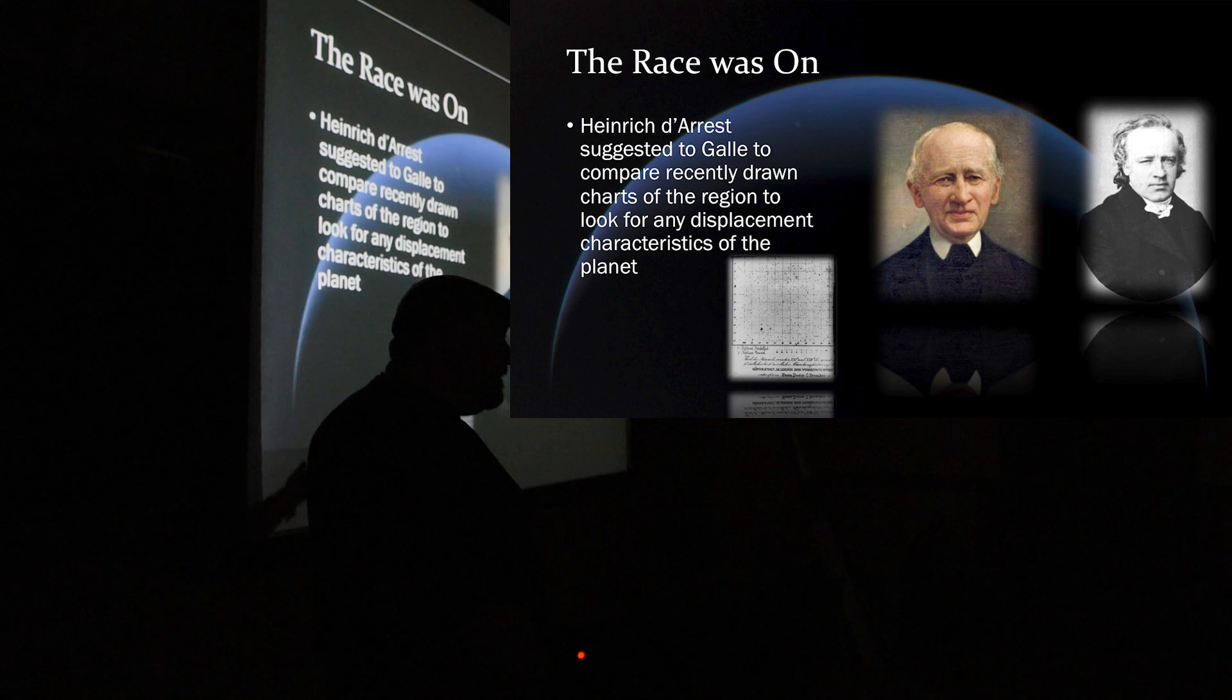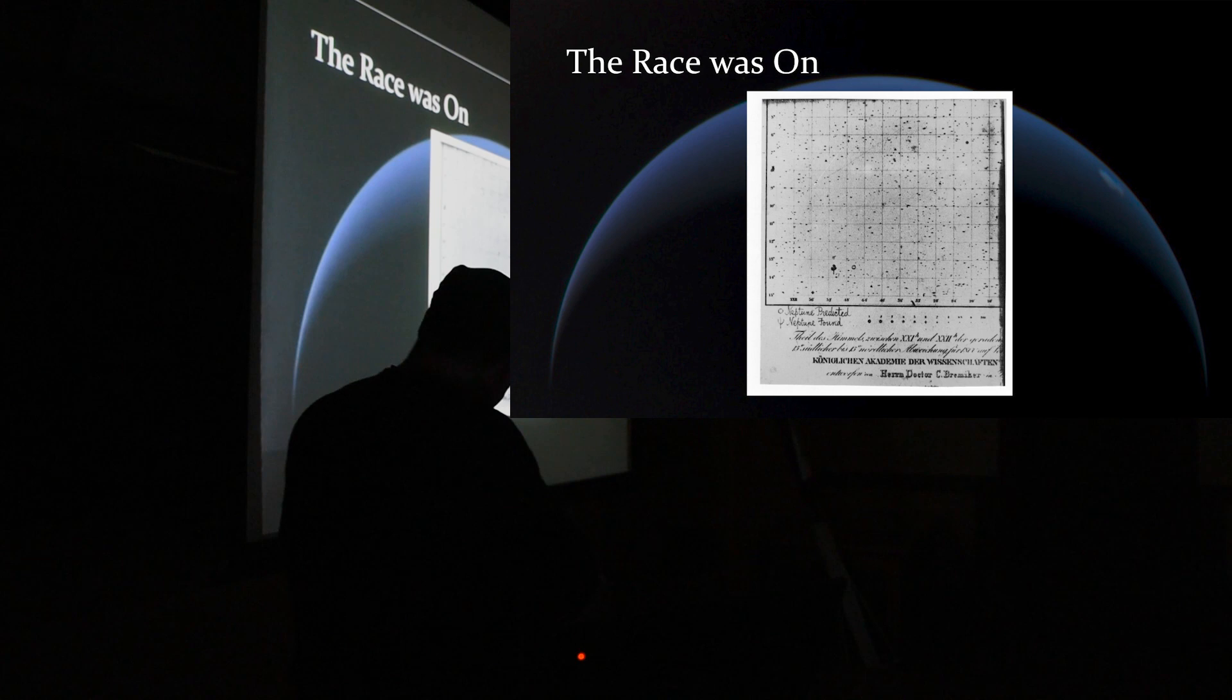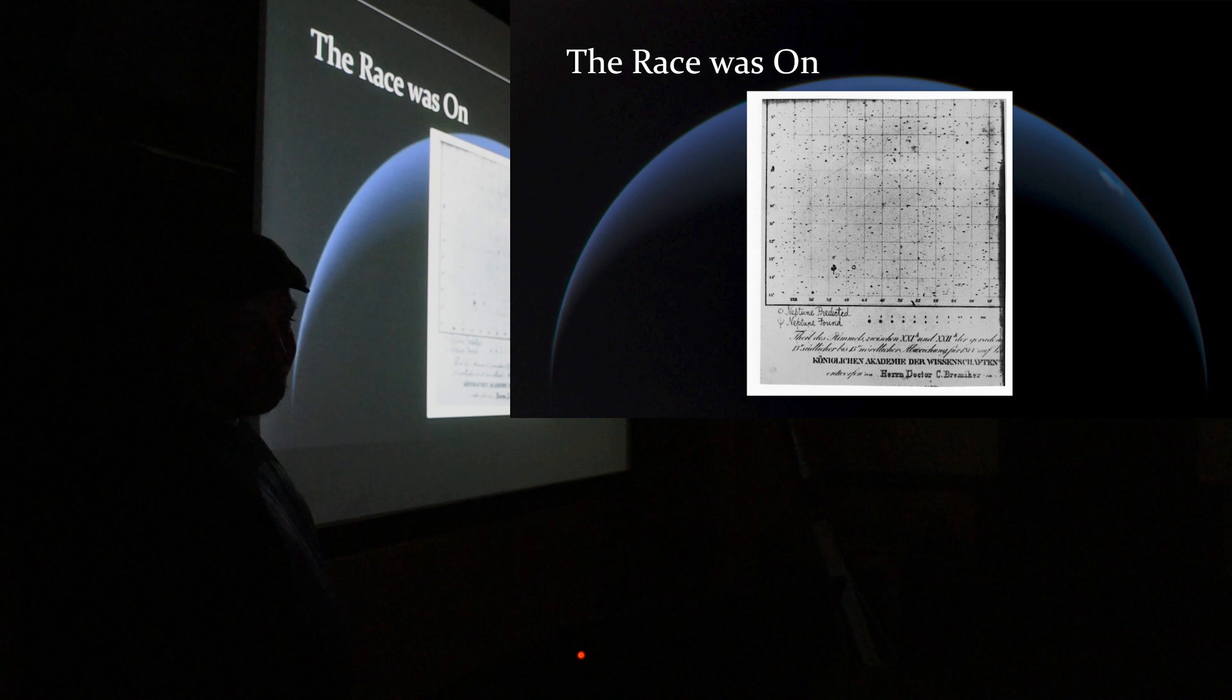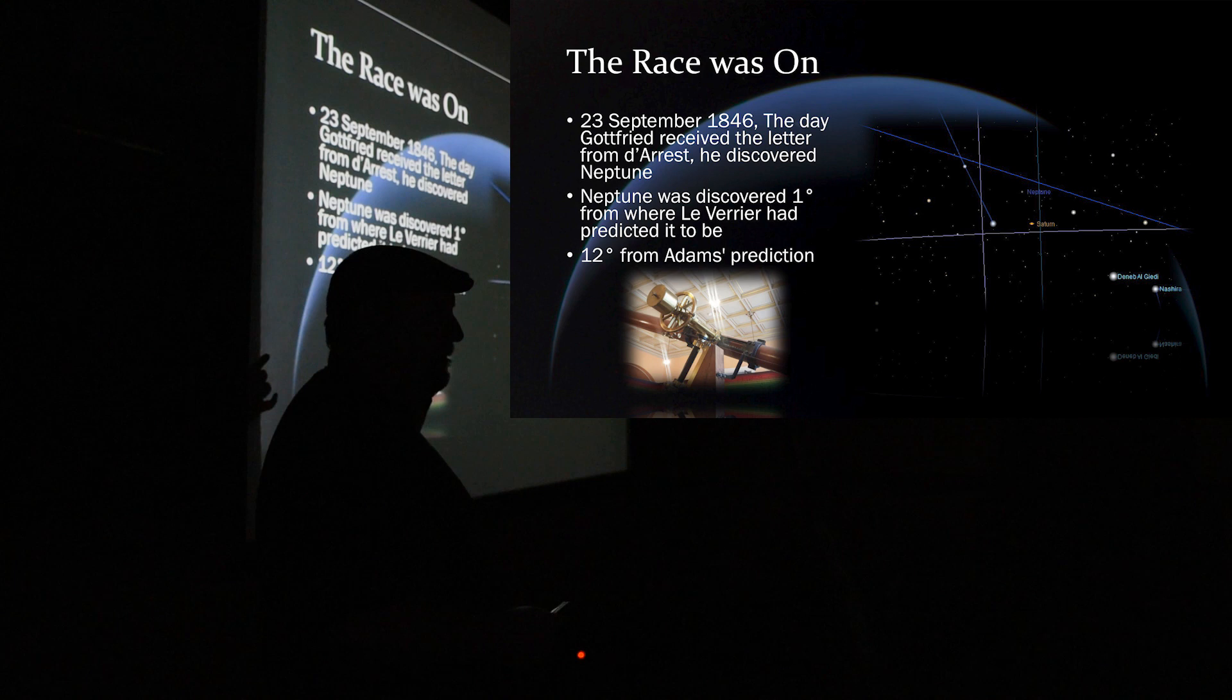In fact, this is the very star chart where, and I got a bigger version of that. This is the star chart that was done at the Berlin Observatory. And here is where it was predicted, and this is where they found it. So, kind of neat. So, the day that d'Arrest, that Gottfried Galle got the letter, he discovered it. Kind of neat.